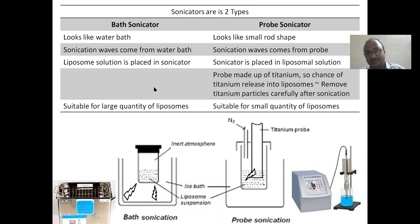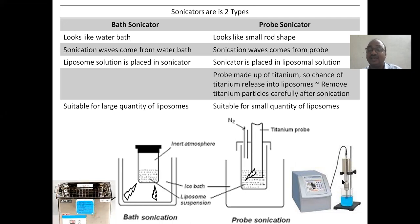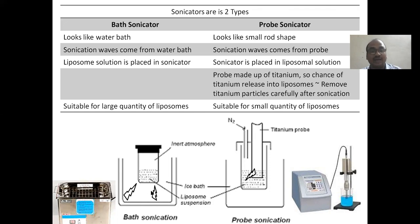There are two types of sonicators — both can be drawn in the examination. First is the bath sonicator: just like a water bath, the sonicator releases ultrasonic waves and you keep your sample in the bath — that is why it is called a bath sonicator. The probe sonicator works like a pH meter — the probe is immersed into the beaker containing liposomal solution, and waves come from this probe into the solution. In the bath sonicator, waves come from the bottom up to the liposome; in the probe sonicator it is reverse — from the probe down into the solution.